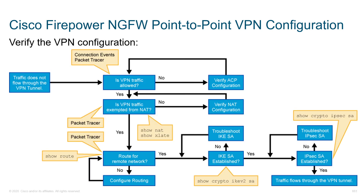This troubleshooting flowchart is similar to what we saw in the last section. First, is VPN traffic allowed to go through? Is it exempt from NAT? Because if you're NATing the traffic, it may not match a CryptoMap. Is routing set up appropriately? If not, configure your routing. If routing is working, we should have an IPSec tunnel established. If not, check your management session — phase one has to come up before phase two. Use 'show crypto ikev2 sa' or 'show crypto isakmp sa' for IKE version 1, to verify phase one is up. Then move to IPSec with 'show crypto ipsec sa'.